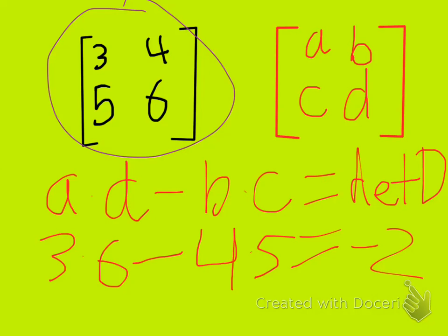I think. Yeah, negative 2, because 3 times 6 is 18, and you subtract 20 and get negative 2.